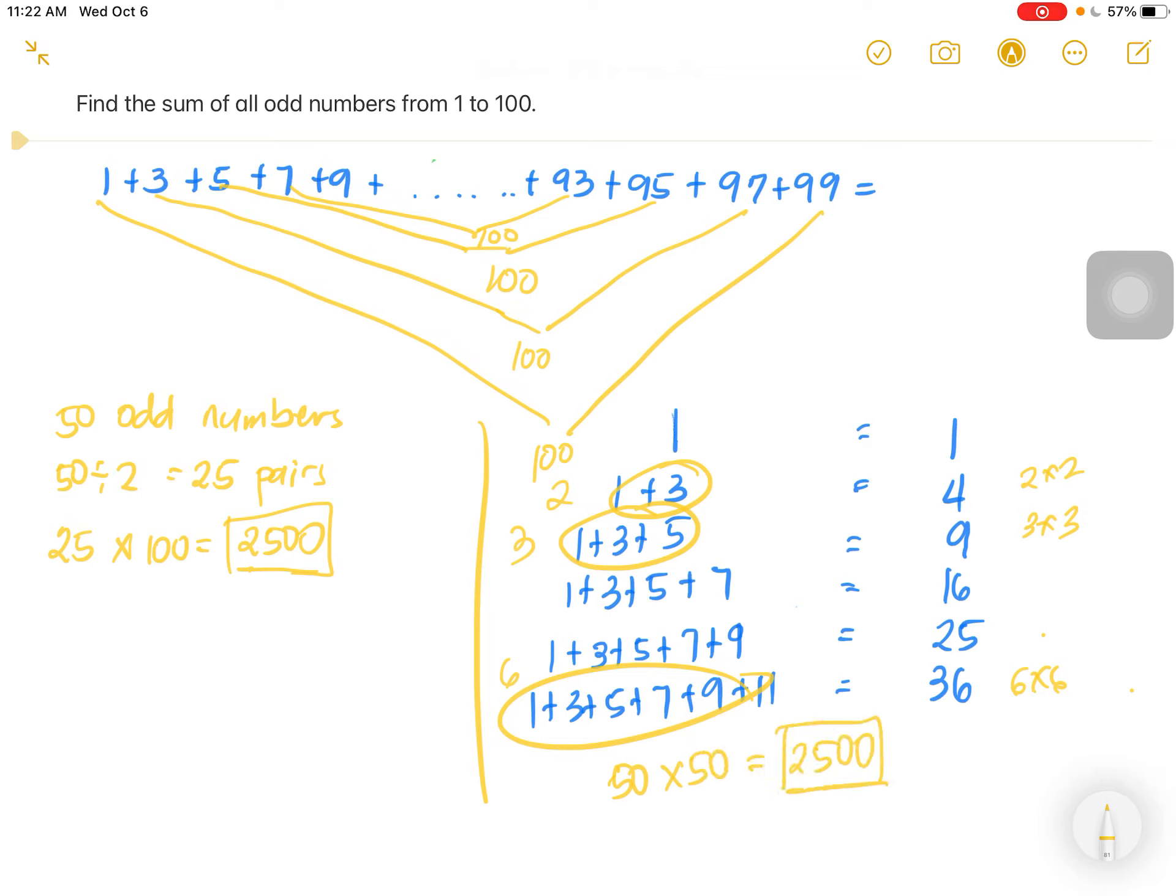So that's another way of doing this. Three ways. Either you, one, tediously add everything up. Two, find the number of pairs and multiply, get the number of pairs and multiply it by the sum of one pair.